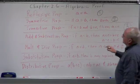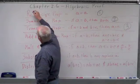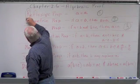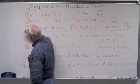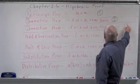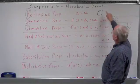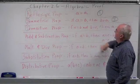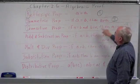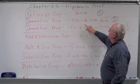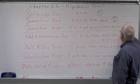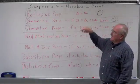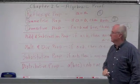Notice that this is RST: one, two, three. Reflexive — one thing. Symmetric — two things. Transitive — three things. RST: one, two, three. That's how I remember it.